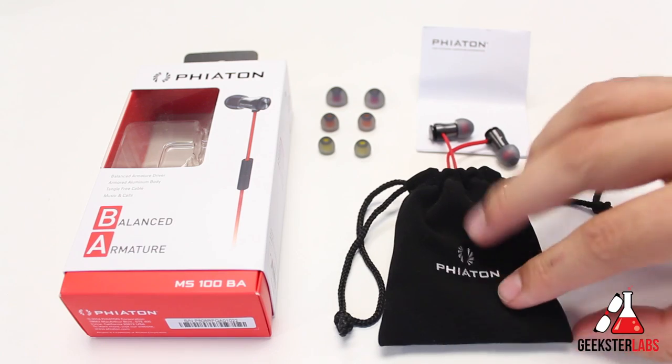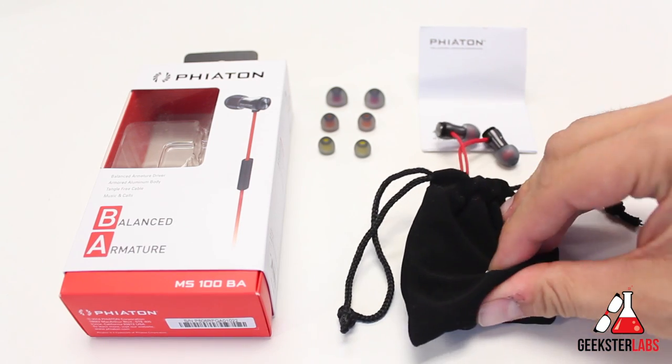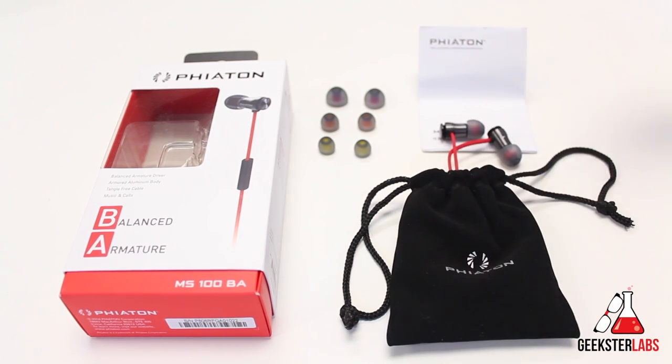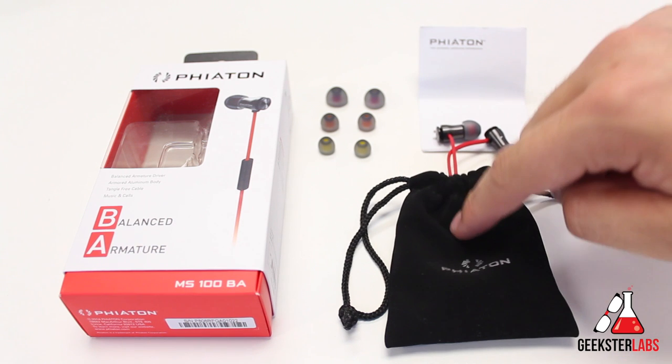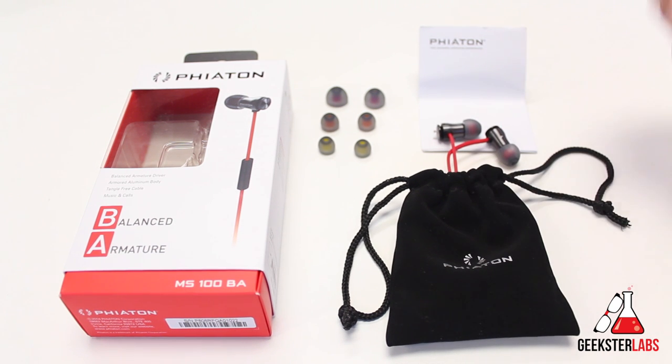It comes with a warranty card, a small soft pouch like a velvet type of pouch, and that's basically what comes with the headphones. The headphones right now are inside here. So let's take them out and show you some close-ups of those ear buds themselves.